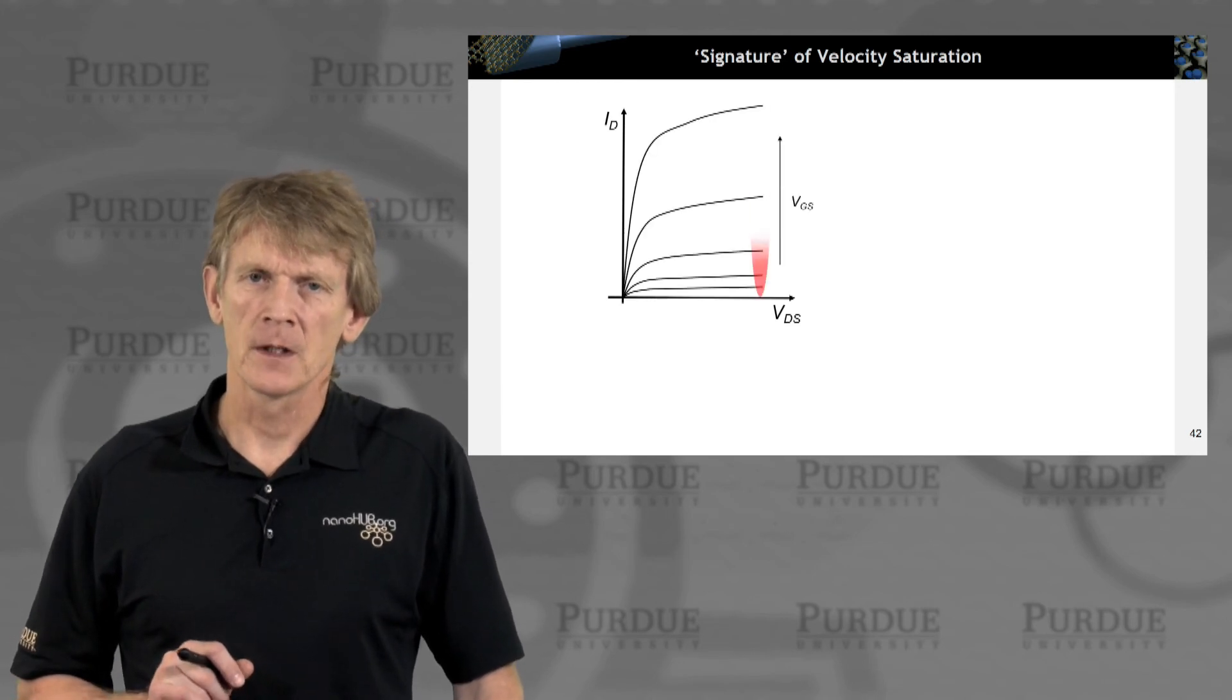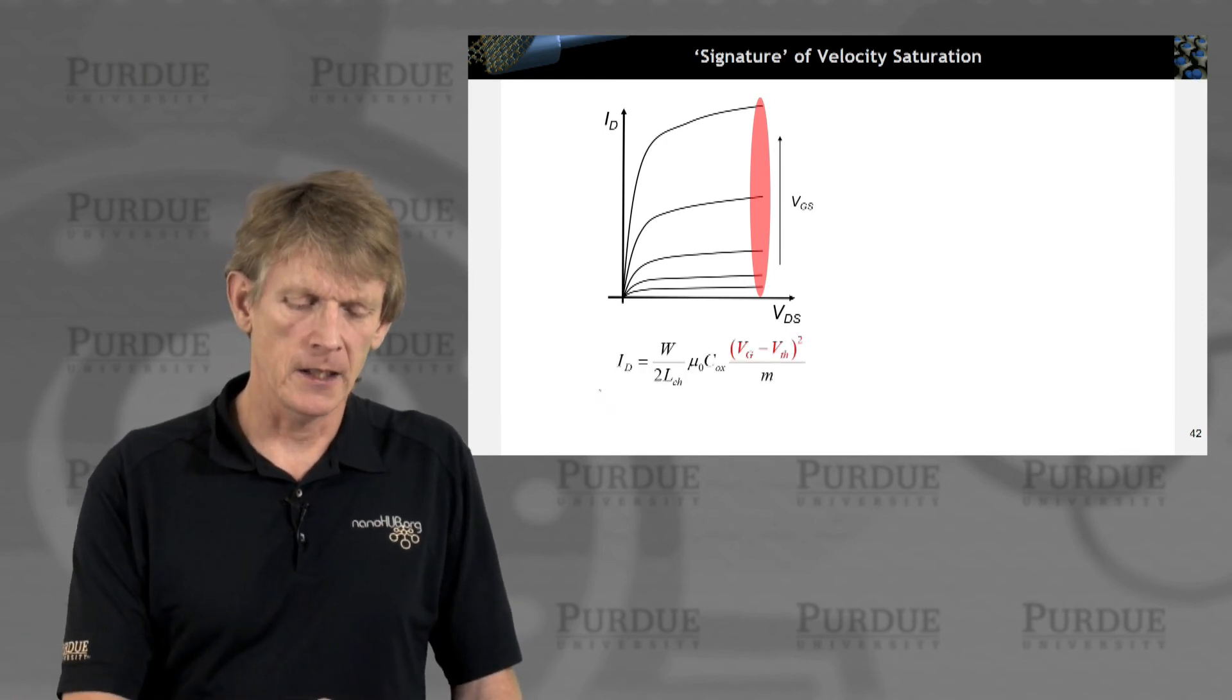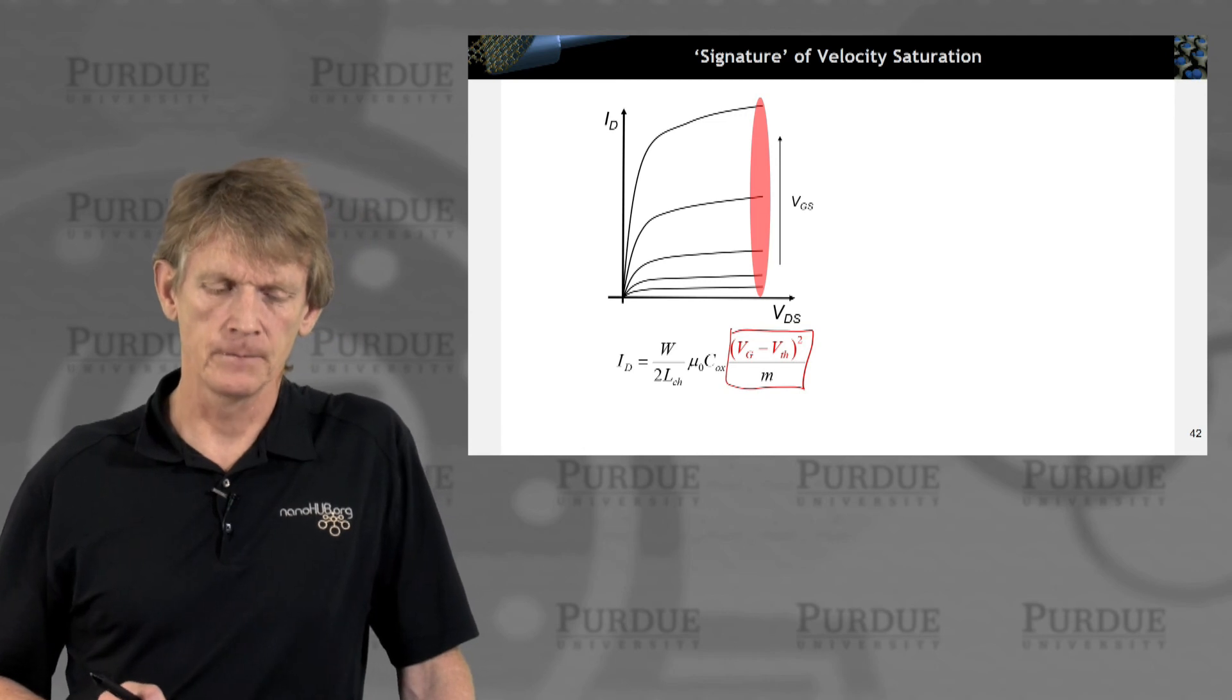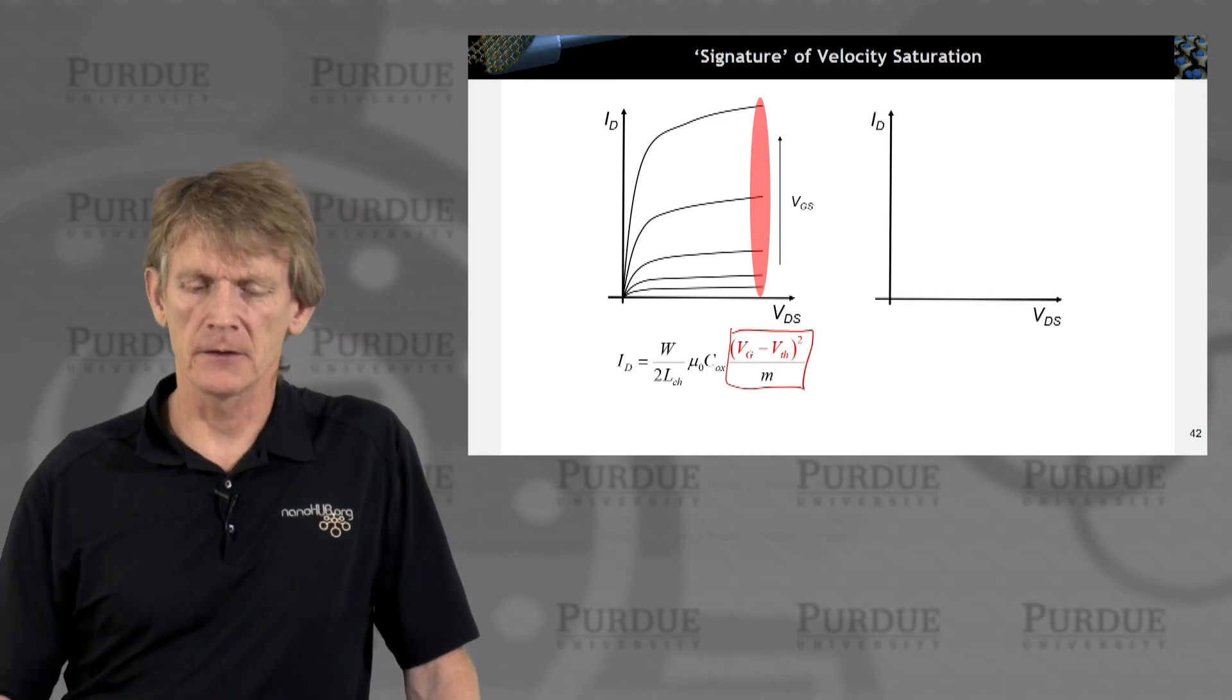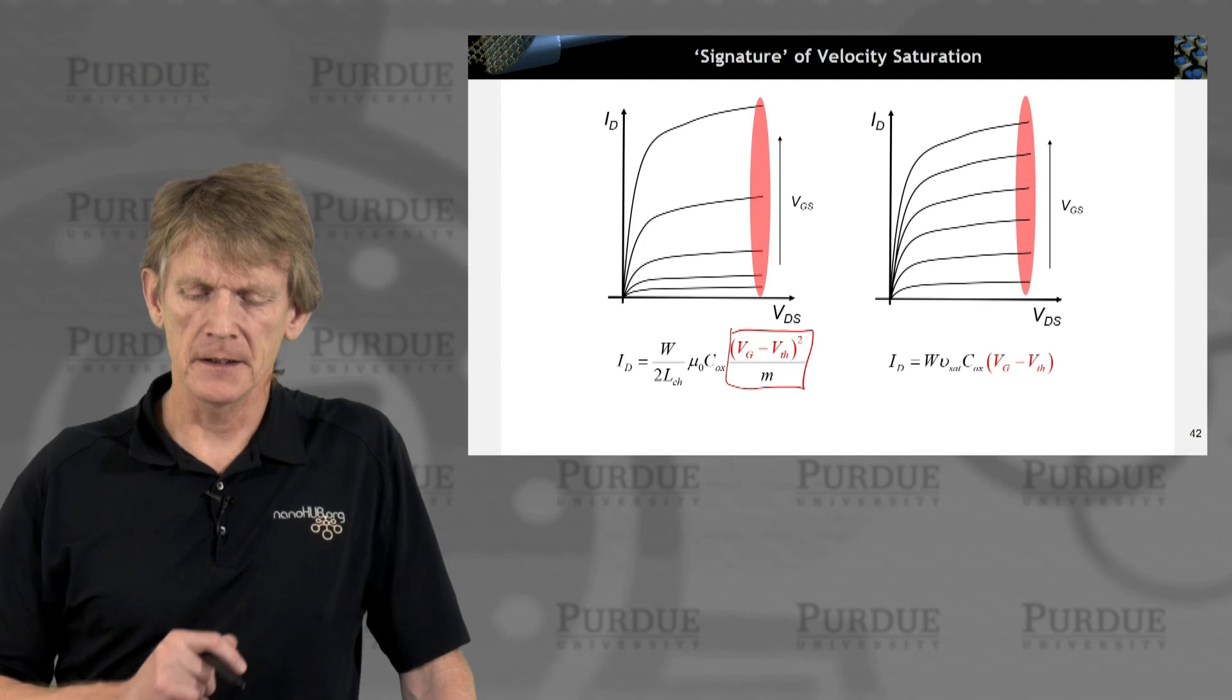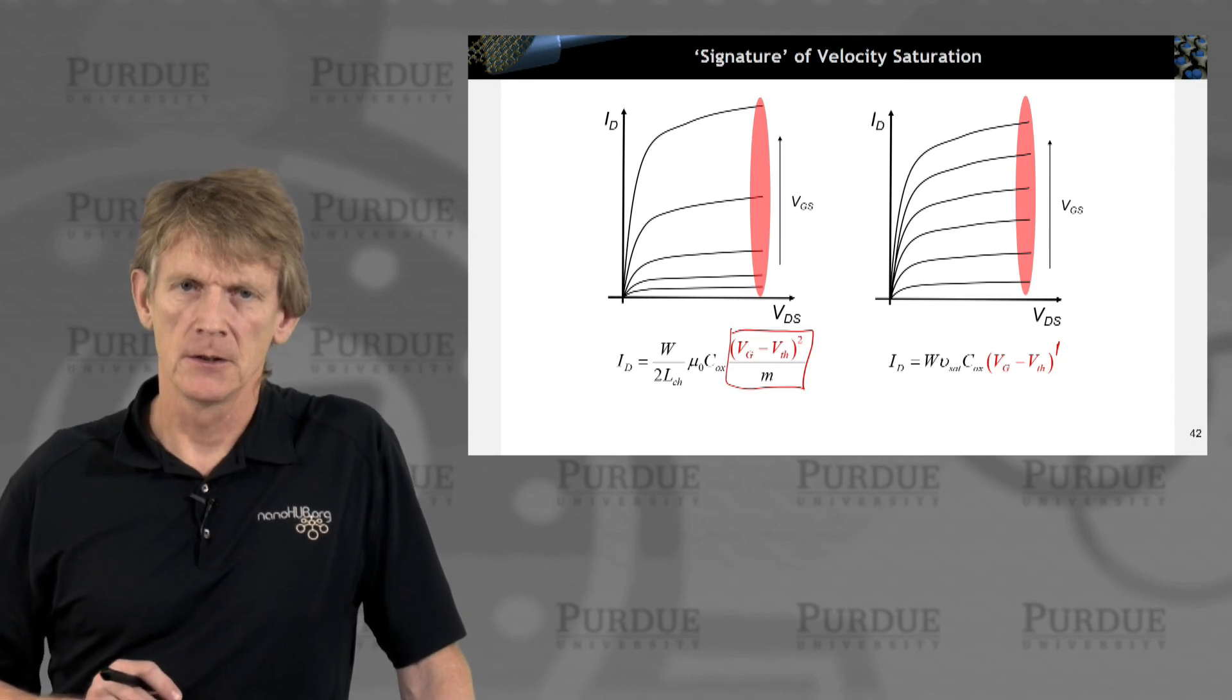Now, the interesting thing is you can look at the signature of this velocity saturation by plotting these IVs. So before, we had our square law dependence as you ramp up Vgs, we calculated a drain current that goes up as the square of Vg minus V threshold. So now if you look at the expression we had on the previous slide and plot it,